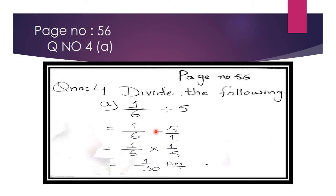When we have a divide sign, we change the operation to multiply and flip the second number. When dividing, we multiply by the reciprocal — we change the number. So 5/1 becomes 1/5.